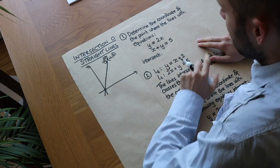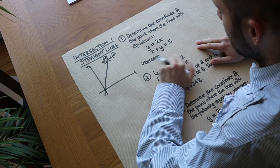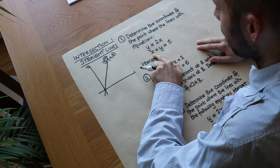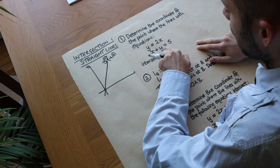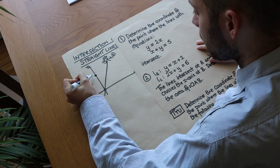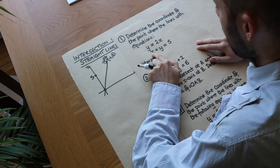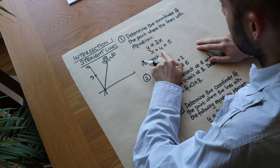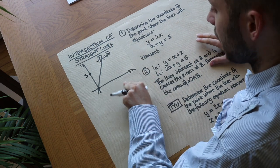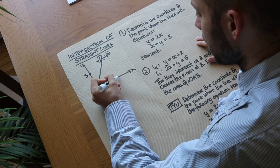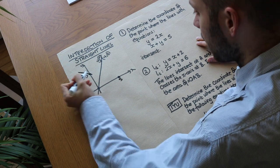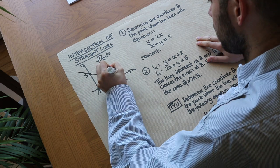We also want to sketch the second line, x plus y equals 5. Choosing two values: if x is 0, then y must be 5, so we plot that point. If x is 5, then y must be 0, since 5 plus 0 is 5. We join those up to get the second line.